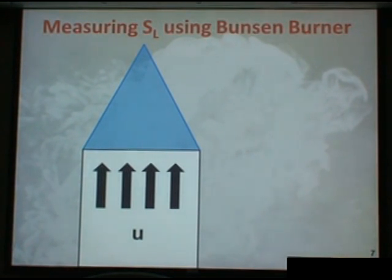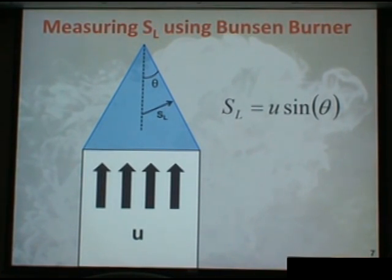We can measure the laminar burning velocity or the burning velocity using a Bunsen burner where we have some velocity u coming out of the Bunsen burner and a flame sitting on top of the burner itself. If we measure the half angle, we call that theta, we can look at the direction normal to the flame, call that the laminar burning velocity, and then define the laminar burning velocity as the bulk flow velocity times the sine of theta. Very straightforward, simple geometry.